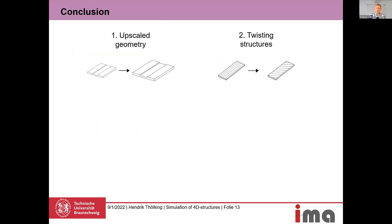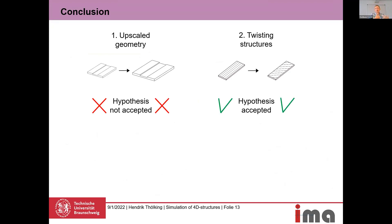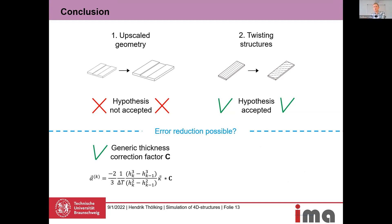To conclude: for the upscale geometry we cannot accept the simulation approach as it stands, but for twisted structures we can. Our question then was whether it's possible to reduce the error observed with upscale geometries. We assumed it's possible to correct this using a generic thickness correction factor — when you determine the thickness change between the simple bending body and the simulated structure, you could apply this factor to change the layer-wise coefficients of thermal expansion or thermal strain. This remains a research objective at our institute.